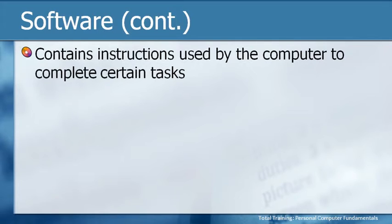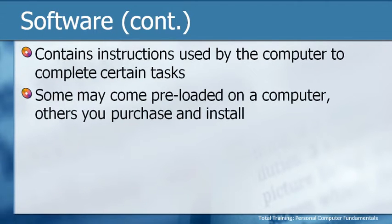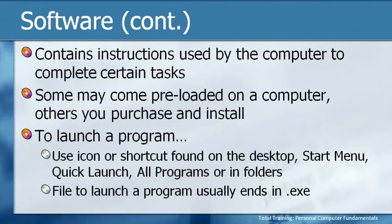Some software may come preloaded on your computer, while others you need to purchase and install yourself. Things like Notepad, WordPad, Calculator, and Paint come bundled with the Windows operating system so you have some functionality without purchasing anything. Once you get going, you'll likely be purchasing your own software — that could be a game, productivity software like spreadsheets or word processors, or multimedia software that lets you burn CDs, rip DVDs, or even make movies.